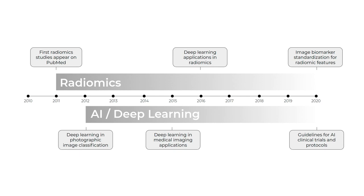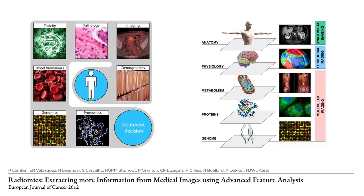Radiomics is the high-throughput extraction of large amounts of features from radiographic images. We've taken the image and data analysis techniques that have served us well in areas such as molecular imaging, proteomics, and genomics, and applied these to radiographic images. This allowed standard-of-care radiographic images to be used for patient stratification, imaging biomarkers, companion diagnostics, and more. Solid cancers are both spatially and temporally heterogeneous, limiting invasive biopsy-based assays, but giving huge potential for medical imaging to capture intra-tumoral heterogeneity non-invasively.